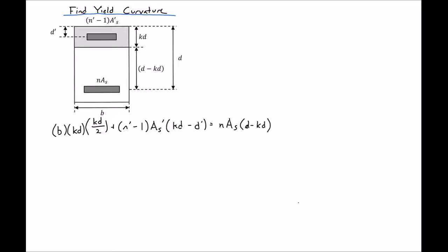Next, we're going to find our yield curvature. We can do this by summing our moments about our neutral axis. Our first one is B times KD, which is our area, times KD over 2, which is the distance from the center of that area to our neutral axis. Then we have N prime minus 1 times AS, our transformed area, times the distance KD minus D prime. And finally, N times AS, our transformed steel area, times the distance from that centroid to our neutral axis.